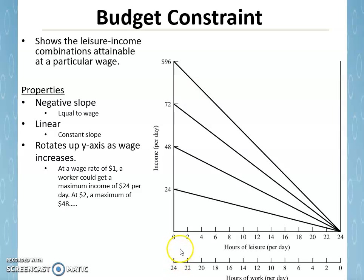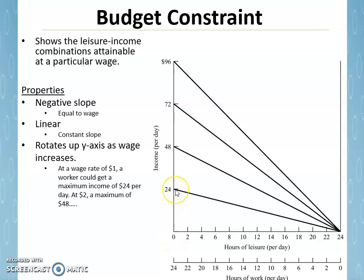Picking up from the last video, we saw that the slope of the budget constraint is the wage, making it a linear relationship that pivots at the 24-hour leisure mark and rotates up the vertical axis by the wage times 24 hours. If somebody has zero hours of leisure, they're working 24 hours, so you take 24 times the wage to get the vertical intercept. For every hour of leisure given up, income goes up by the wage — hence the slope is the wage — until maximum income of 24 hours times the wage is reached.